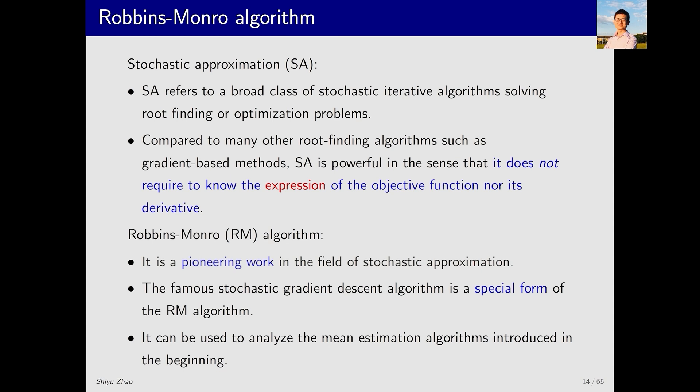The Robbins-Monro algorithm, abbreviated as RM, is a pioneering work in the field of stochastic approximation. The widely used stochastic gradient descent algorithm is a special form of the RM algorithm. The mean estimation algorithm introduced earlier is also a special form of the RM algorithm.